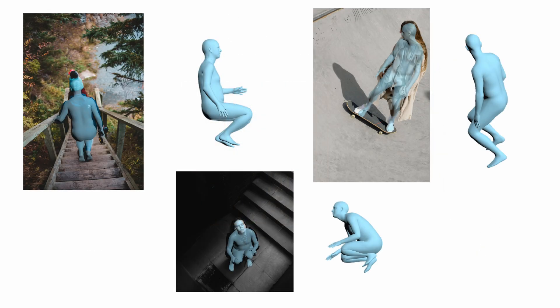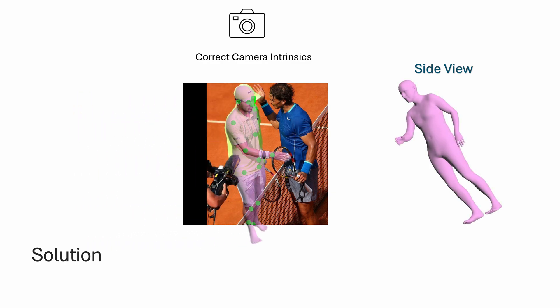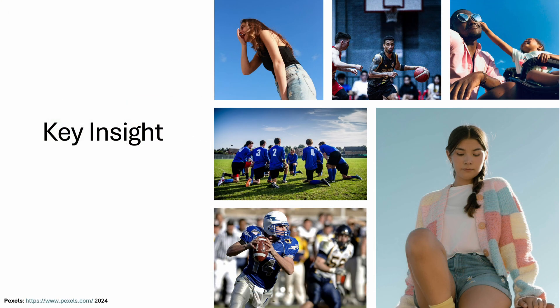When trained with such data, models learn the biases of the dataset. The solution is clear: accurate 3D pose estimation with precise 2D alignment requires correct camera intrinsics. Most camera calibration methods are trained on object-centric datasets with clear vanishing points and often struggle with images of people. Our key insight is that people in images provide crucial camera information due to their consistent proportions and limited height range.